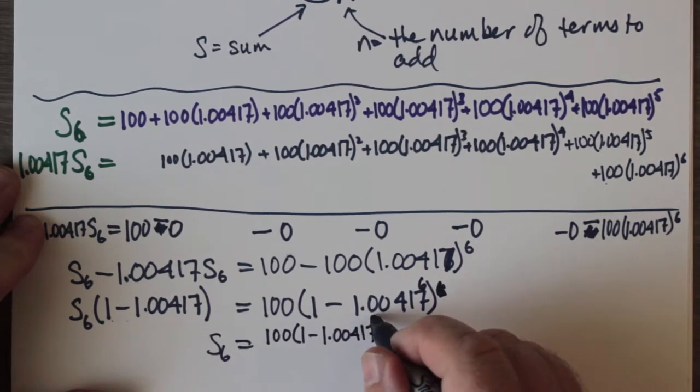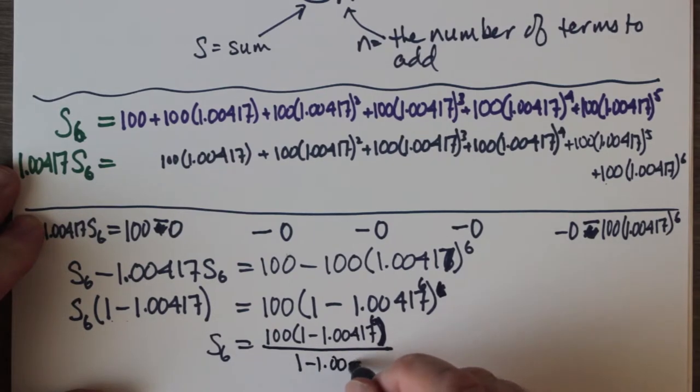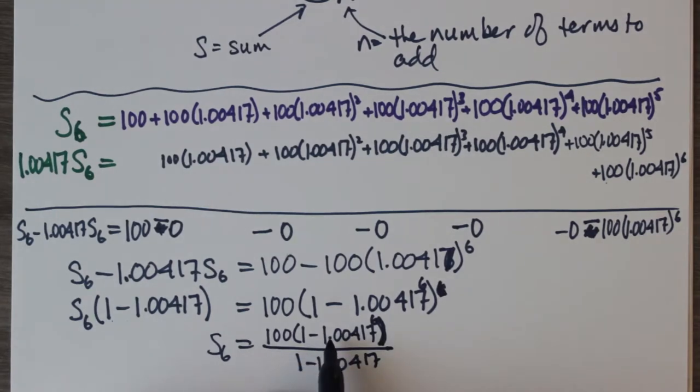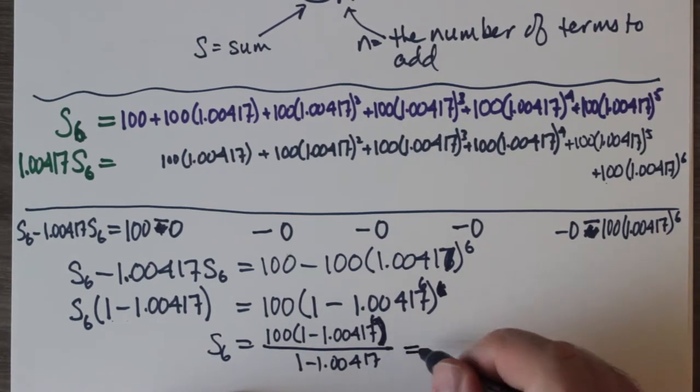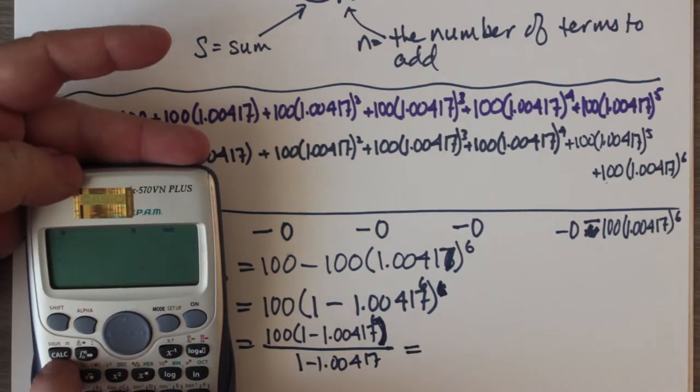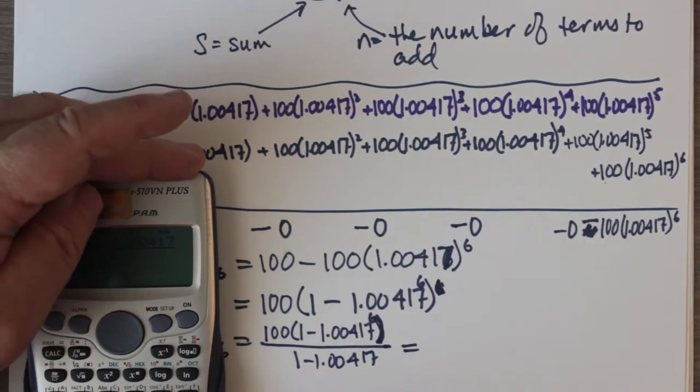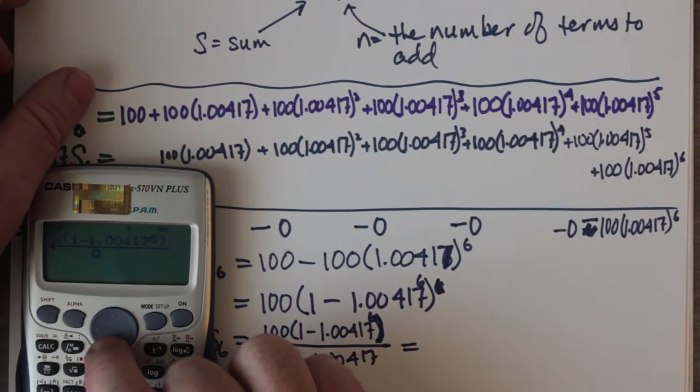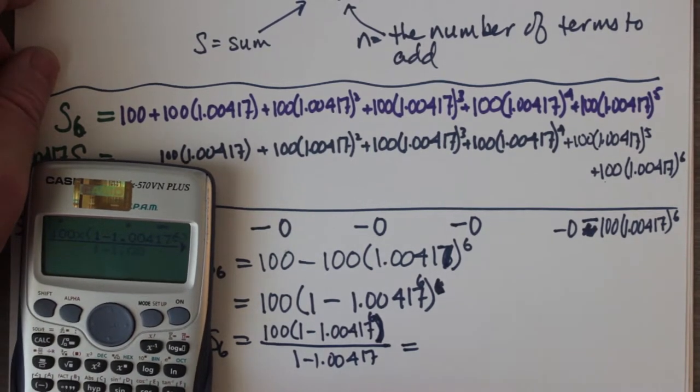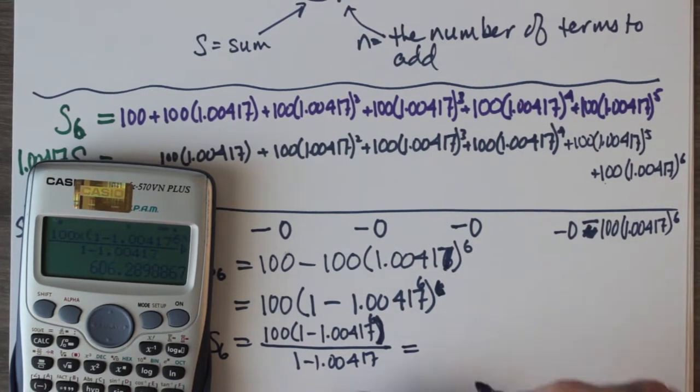Notice the only unknown in this calculation is S sub six. So let's try doing this calculation on a calculator. Now we have something we can enter in a fraction. I have 100 multiplied by, in brackets, 1 subtract 1.00417 to the power of six. Close the bracket. And then go to the bottom. I go 1 minus 1.00417. I hit equals, and I get exactly what I got before, $606.29.